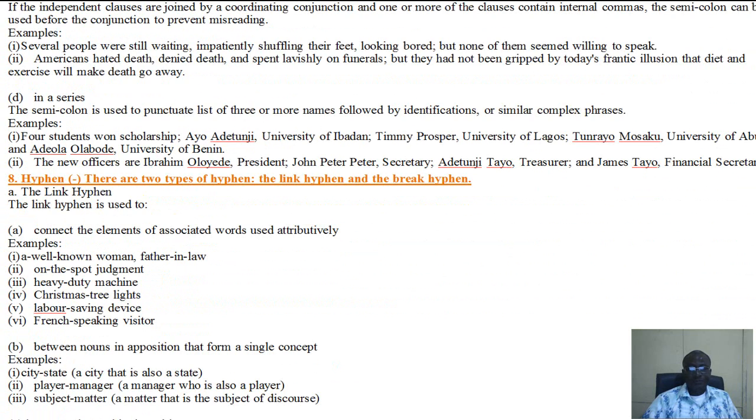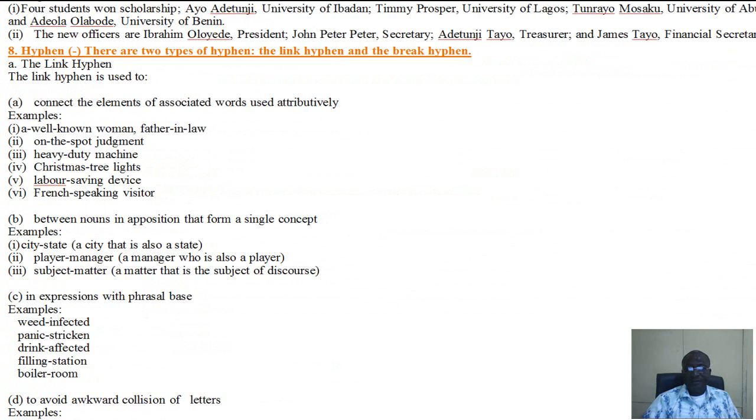Then we go to the hyphen. There are two types of the hyphen. The first is called the link hyphen and the second is called the break hyphen. We start with the link hyphen and then we subsequently look at the break hyphen. The link hyphen is used to connect the elements of associated words used attributively. An example is a well-known woman, father-in-law, on the spot judgment. Connecting elements of associated words used attributively.